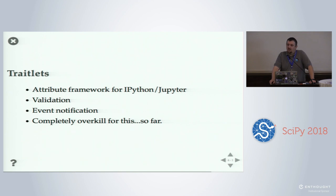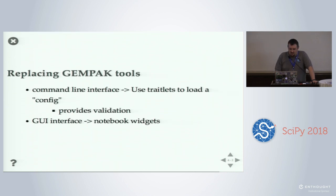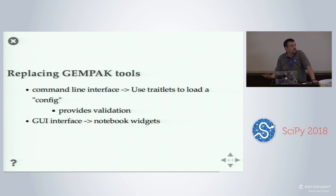If you're not familiar, traitlets is an attribute framework that started with IPython and Jupyter — that's how they do their configuration management. It provides validation for attributes to make sure you use the proper types. It also provides event notification so that when attribute values change, you can get notified and do some event-driven style programming. Now, all those things I just did to make those images — that was completely overkill. I don't need event notification; I just need to set attributes and generate a plot. But part of replacing GEMPACK tools is this simplified interface where we don't want people to figure out which six names to import from three different modules — we want to drive this essentially as a configuration file.